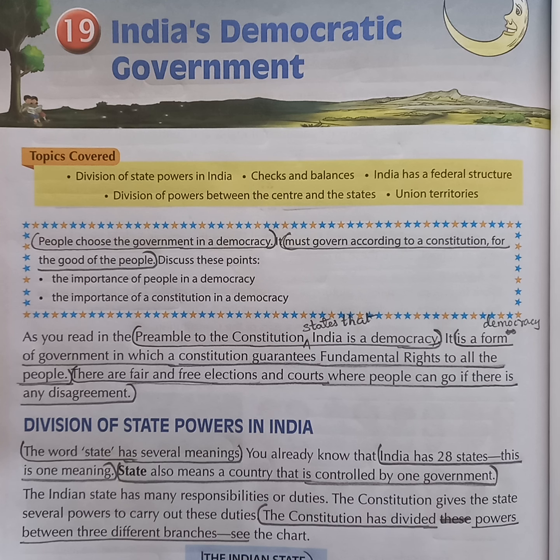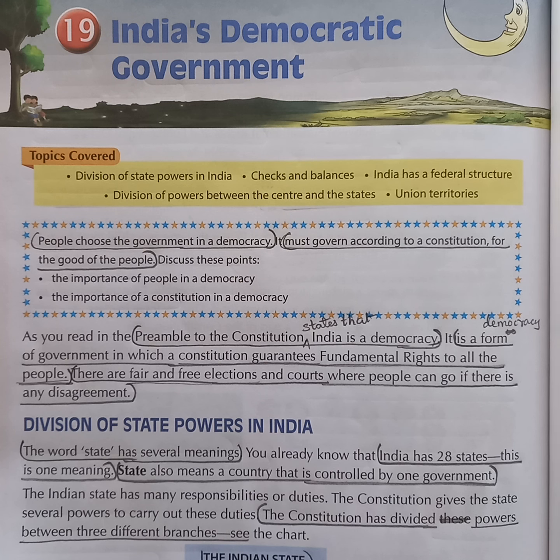First question: who chooses the government in a democracy? Answer: people choose the government in a democracy. Next question: how must a democratic government govern? Answer: a democratic government must govern according to a constitution for the good of people.